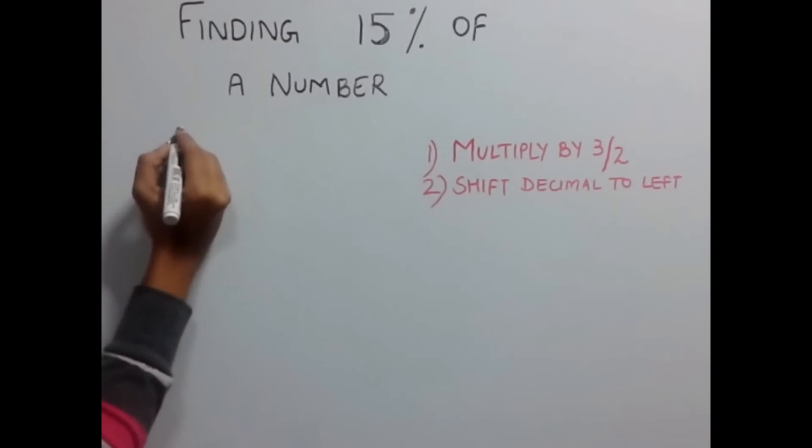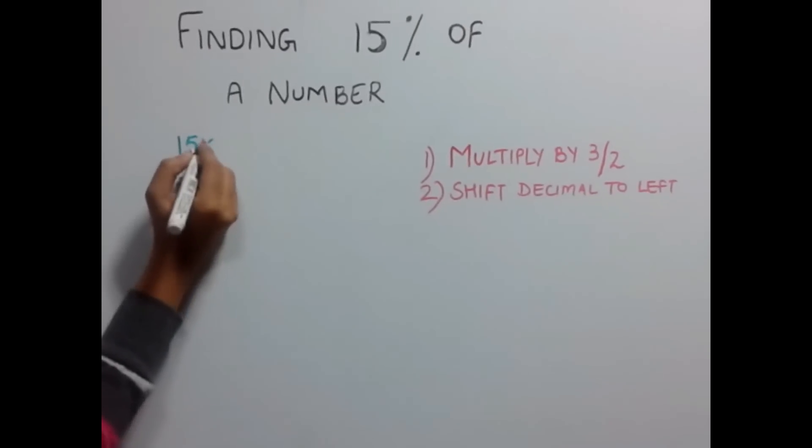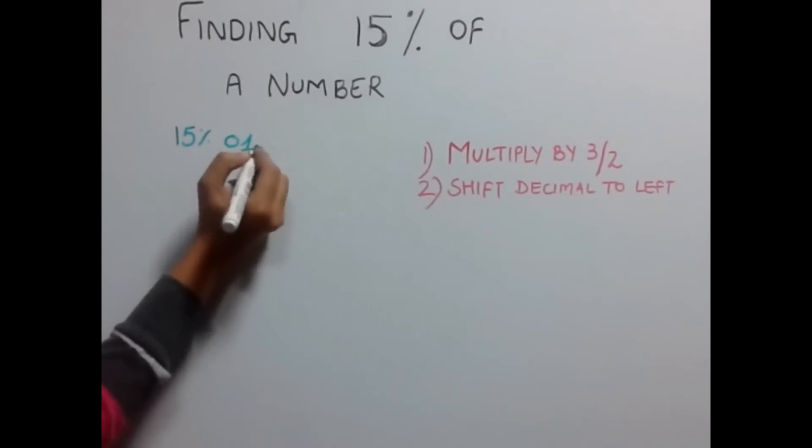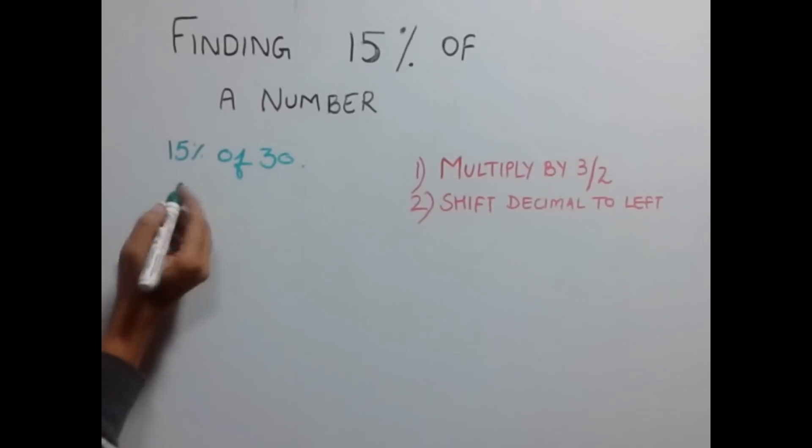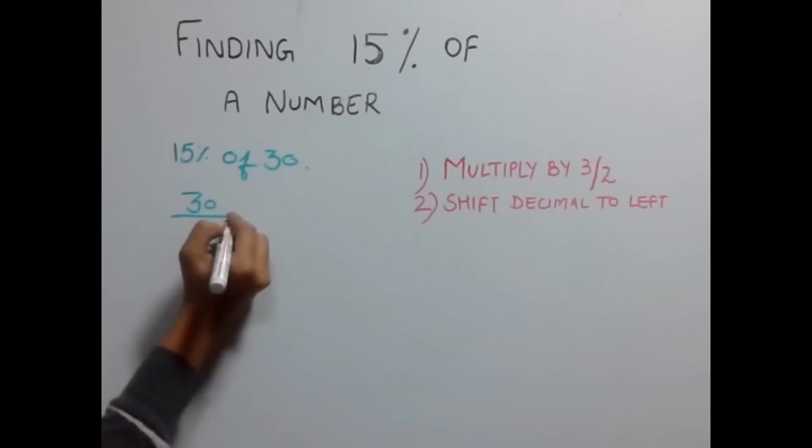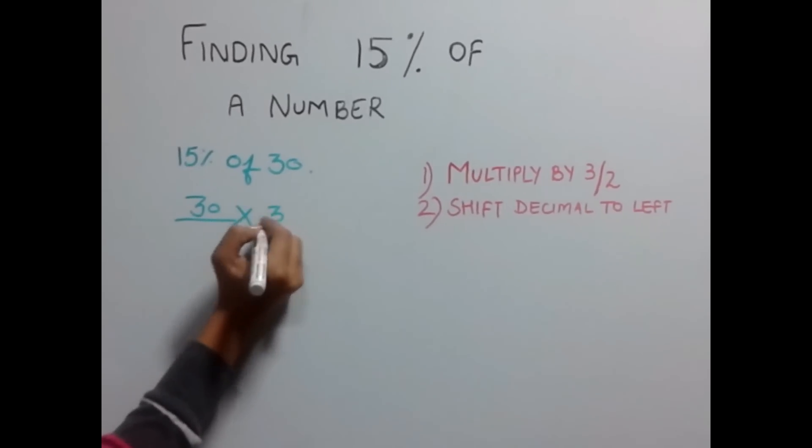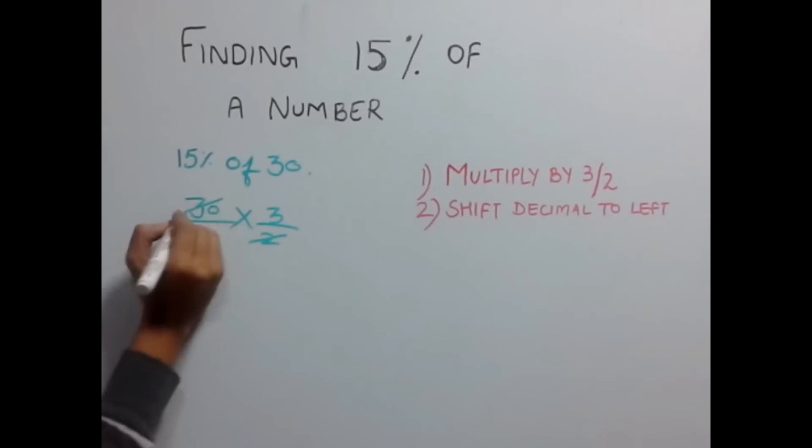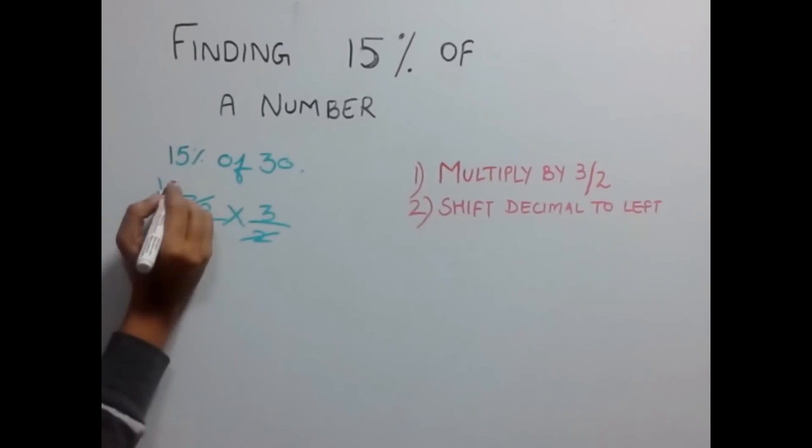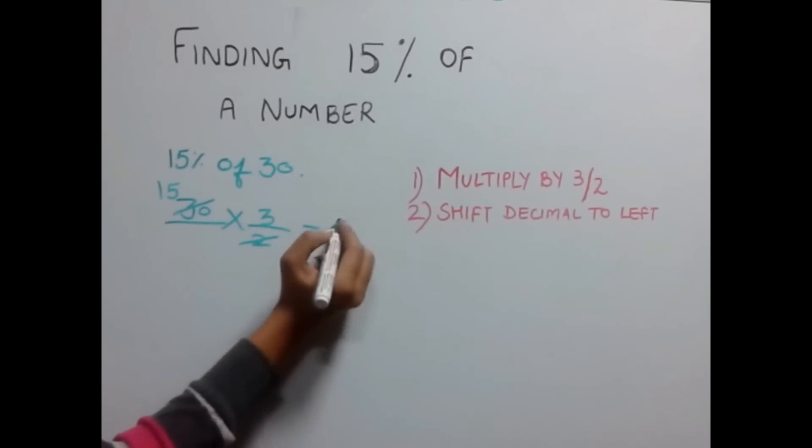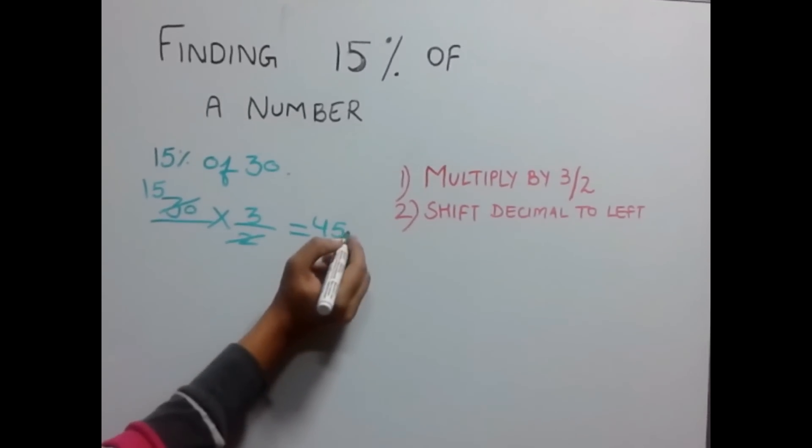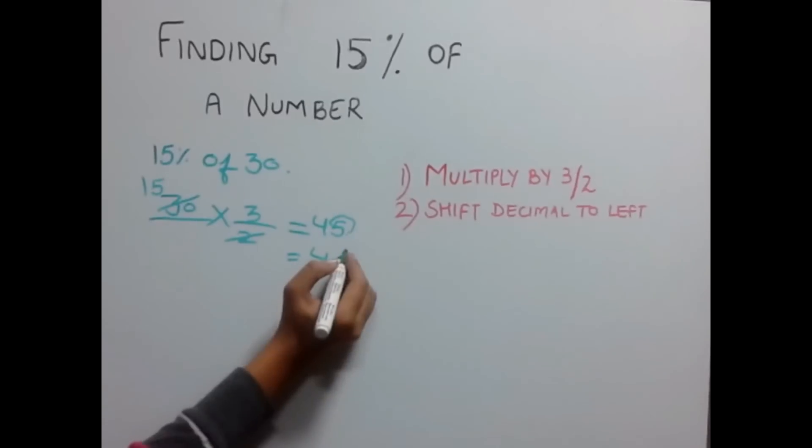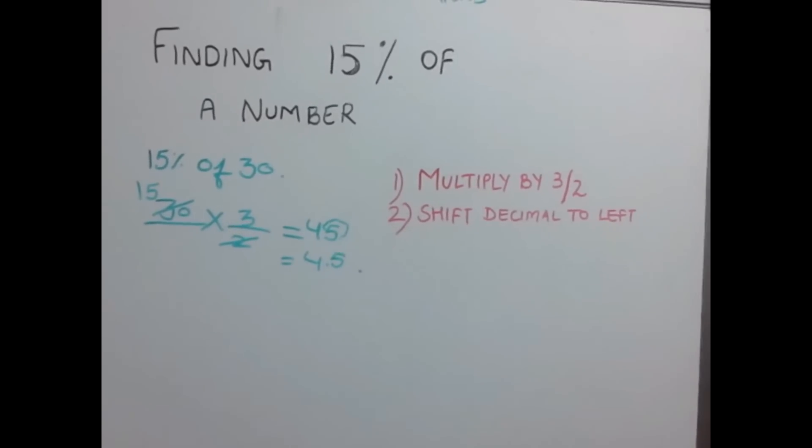Let's find out 15% of 30. So multiply 30 by 3 by 2. 30 divided by 2 gives 15, and 15 into 3 gives 45 as the answer. Now shift one decimal to the left, which gives 4.5 as the answer. Easy.